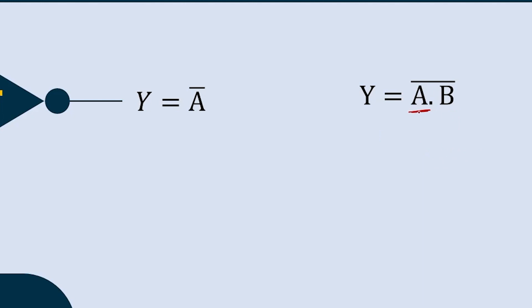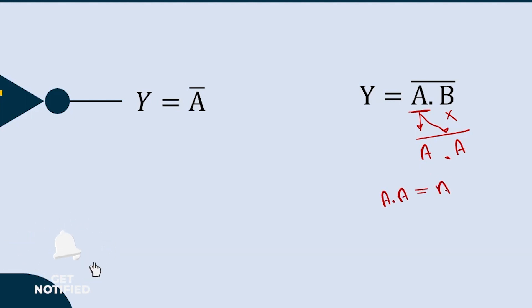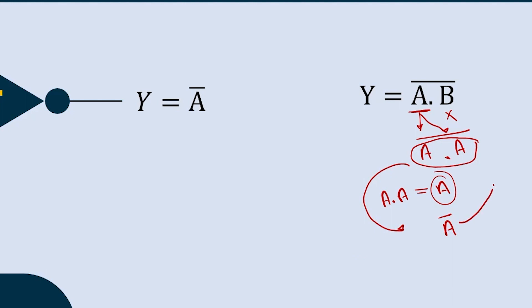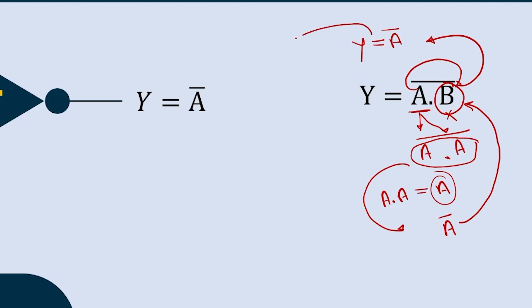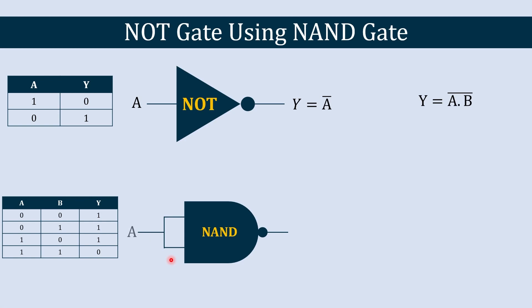What we will do is keep A as it is and replace B with A as well, so the equation becomes A·A. Since A·A = A, we can rewrite the whole expression as Ā. So if we remove B and connect both input terminals to A, the output becomes Y = Ā, which is exactly what we want. We short the two input terminals and give only input A.